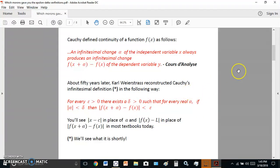Anyway, about 50 years later, Karl Weierstrass reconstructed Cauchy's infinitesimal definition in the following way. As you see here in the red, for every epsilon greater than zero, there exists a delta greater than zero, such that for every real alpha, if alpha is less than delta, then the absolute value of f(x + alpha) - f(x) is less than epsilon. You'll see x minus c in place of alpha and f(x) - L in place of that in most textbooks today. And I'm going to explain to you what Karl Weierstrass did, in fact, use to come up with this definition. So let's continue.